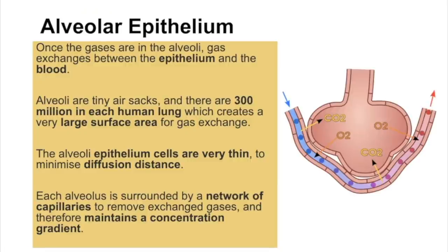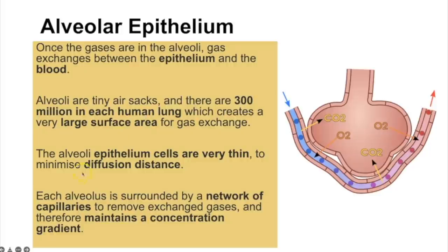Gas exchange at the alveolar epithelium: once gases are in the alveoli as a result of ventilation, gas exchange occurs between the epithelium and the blood. Alveoli are tiny air sacs — you have around 300 million in each lung, which is why lung tissue floats. The alveolar epithelium cells are very thin to minimise the diffusion distance, just one thin layer. Each alveolus is surrounded by a network of capillaries to maintain the concentration gradient, carrying oxygen away as soon as it diffuses in.